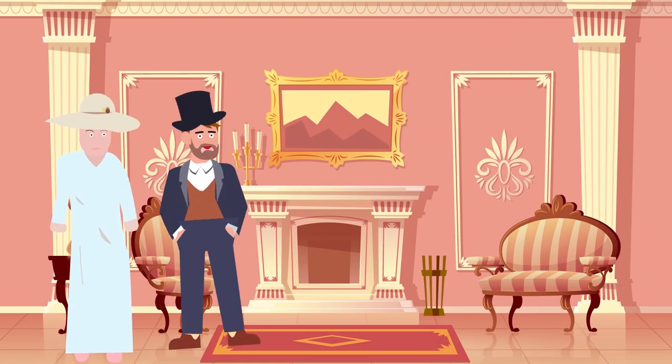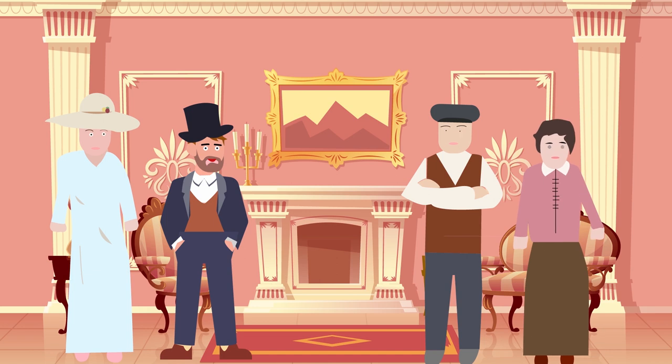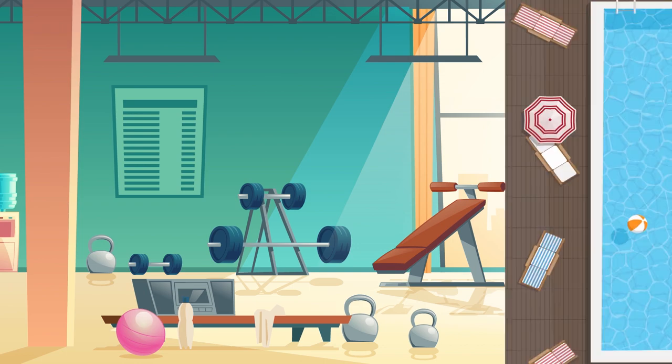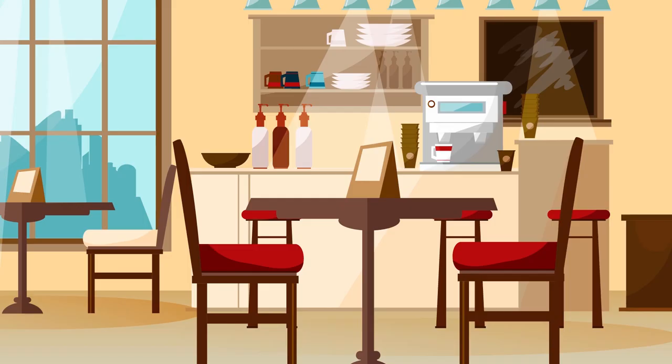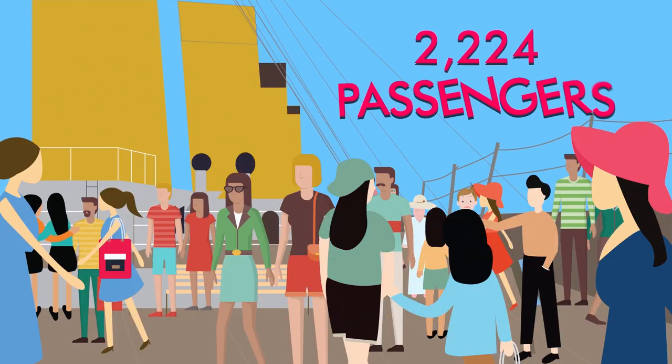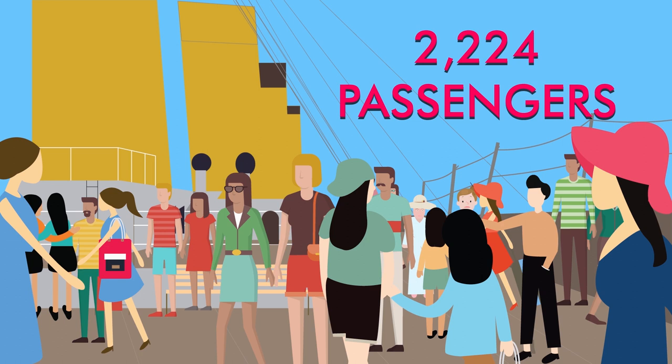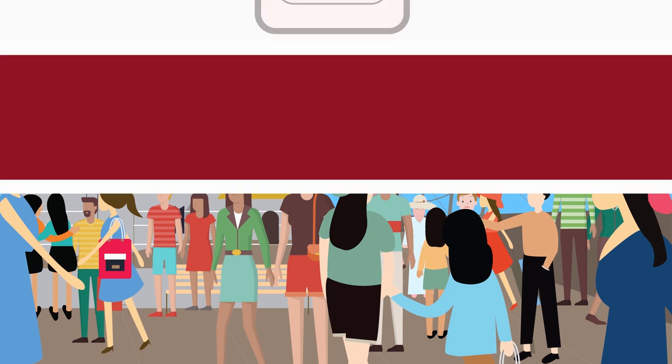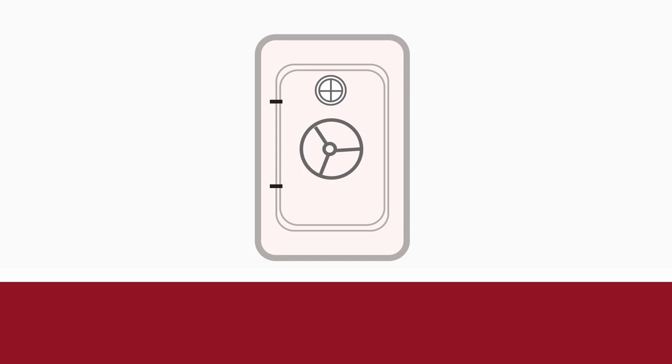The Titanic had some of the world's wealthiest and most prominent people on board, enjoying the previously unheard of on-board amenities like a gym, swimming pool, libraries, and high-class restaurants. Its 2,224 passengers were even protected by advanced safety features like watertight compartments and doors.